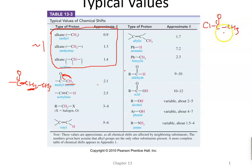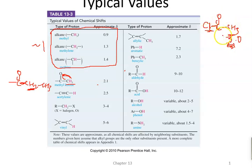If I had an acid chloride — a methyl group next to a carbonyl that also has a chlorine — do you think those hydrogens would still be at 2.1? No. The chlorine has an additional effect. Understanding that the more electronegative atoms something's attached to, the more deshielded it will be. In fact, those hydrogens might be around 3, because they now have more electronegative atoms affecting them.